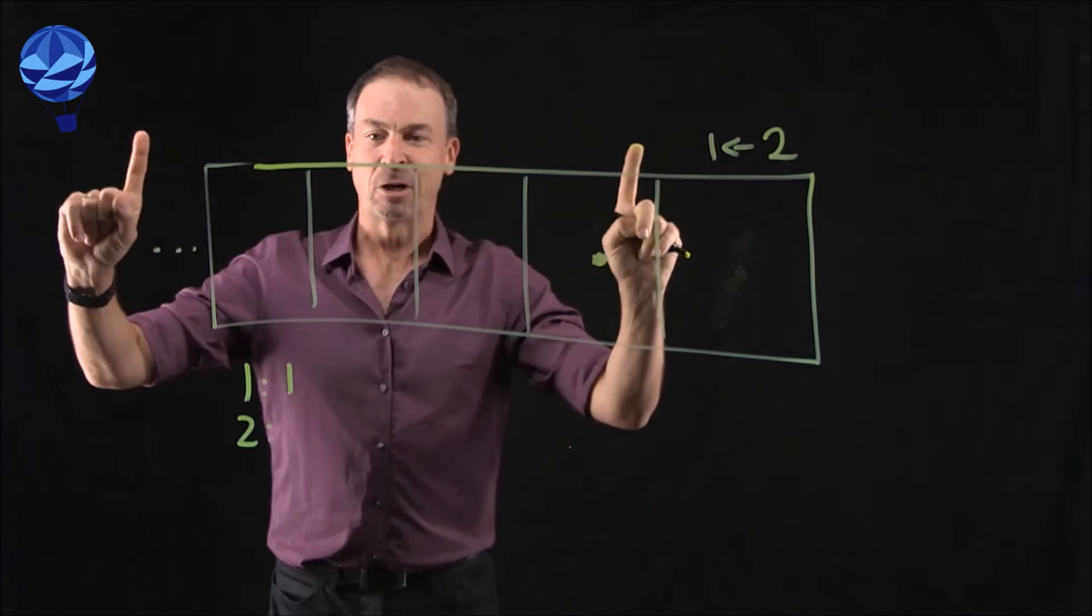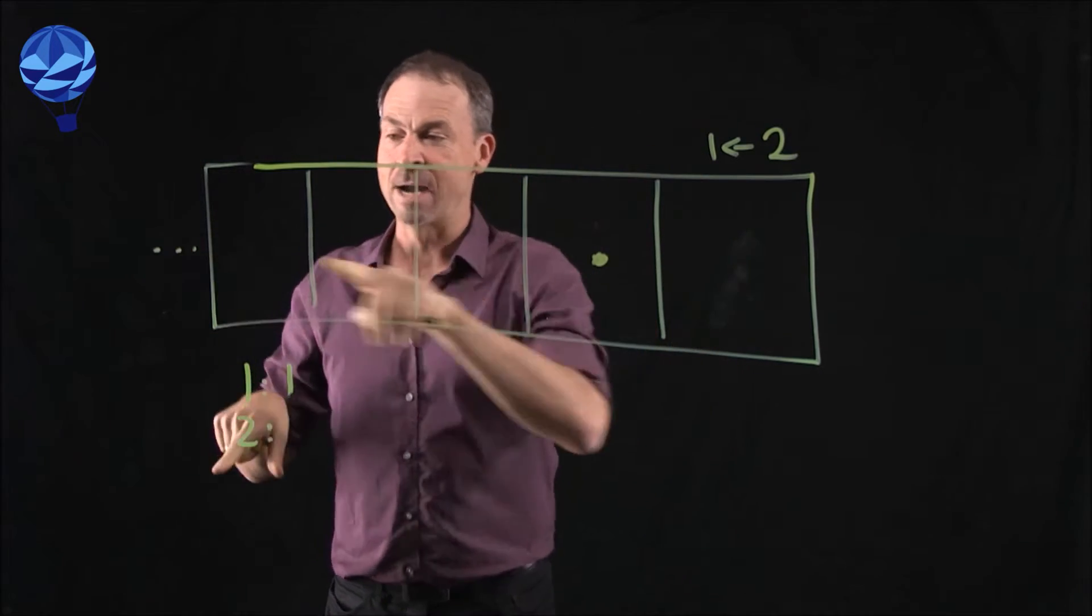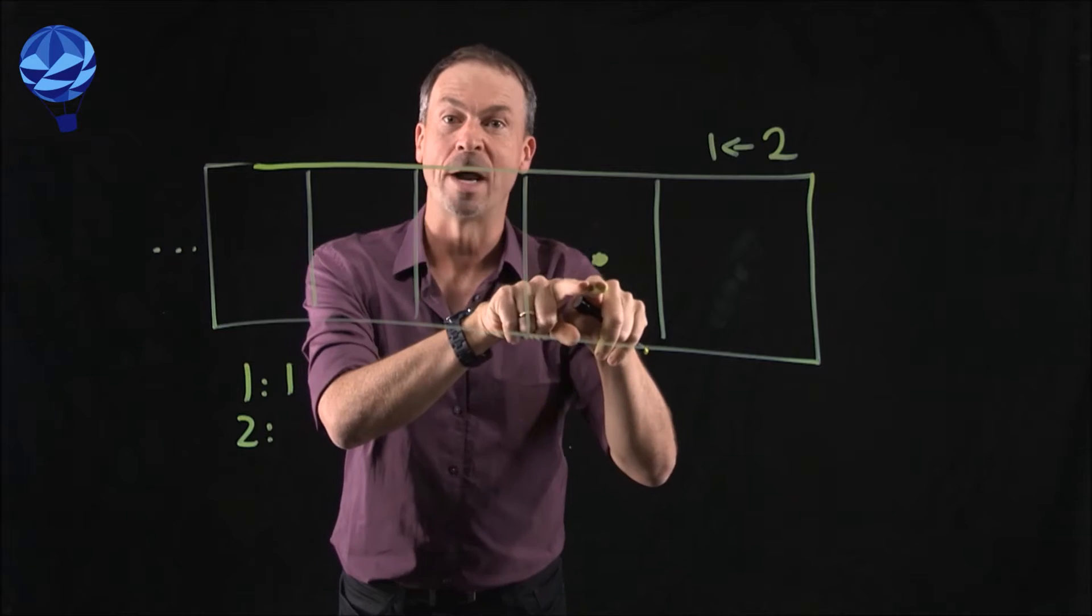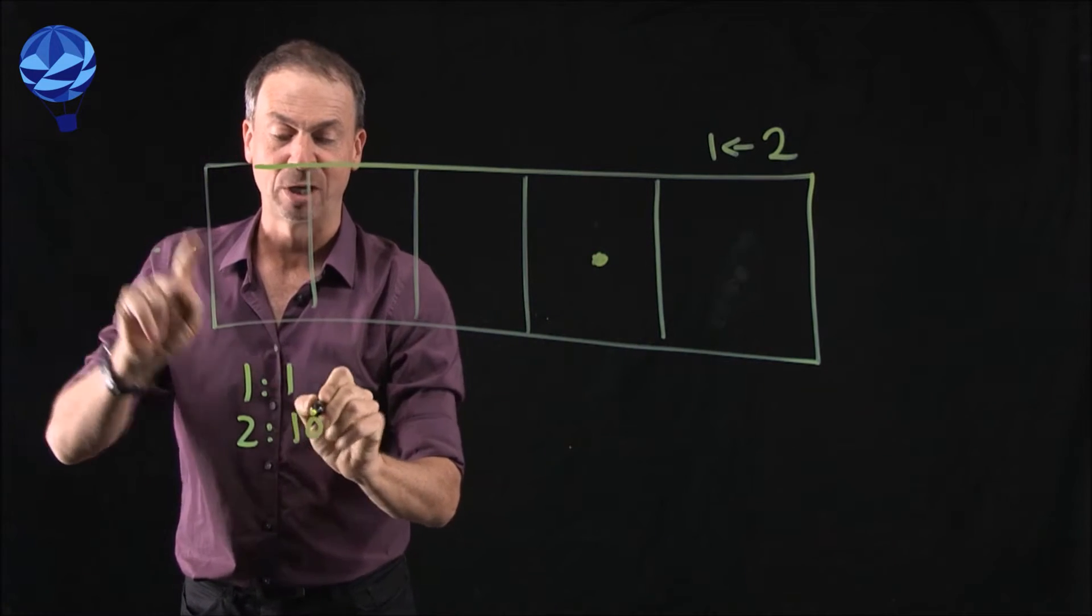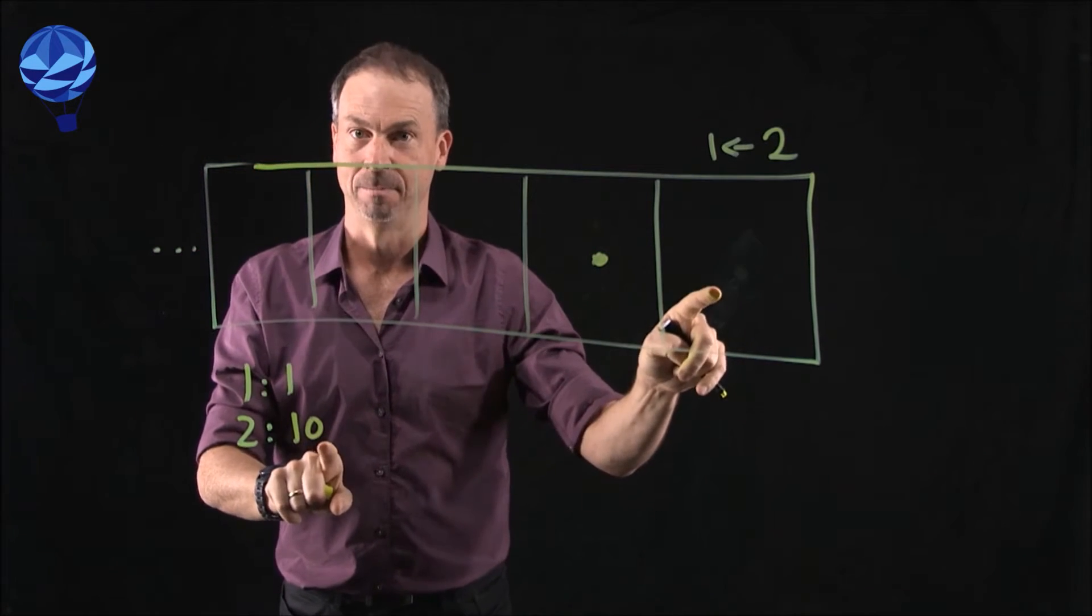Get it? All right. So now two dots looks like this picture, which I'm going to write as nothing, nothing, nothing, nothing, one dot, zero dot. So the code for two in a 2-1 machine is now 1-0. All right.